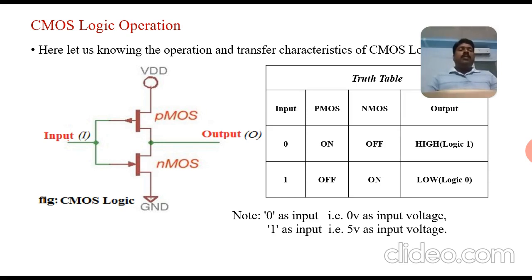Similarly, if logic 1 (VDD) is applied at the input of the CMOS inverter, then P-MOS turns OFF and N-MOS turns ON. The path between VDD and output is disconnected, and the channel connects output to ground. Whatever data is at the output discharges to ground through the N-MOS device, so we get output response as logic zero.